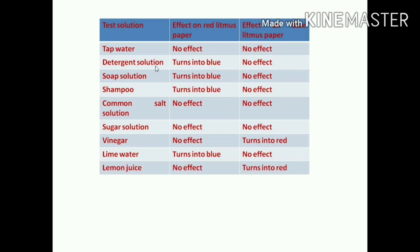Next look at detergent solution. Detergent solution is basic in nature, means it is a base. So it turns the red litmus paper into blue. But the blue color litmus paper has no change in detergent solution.